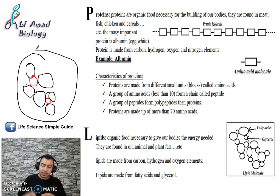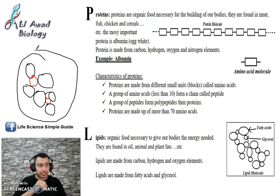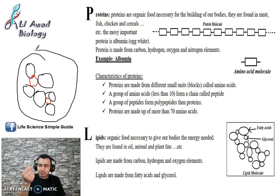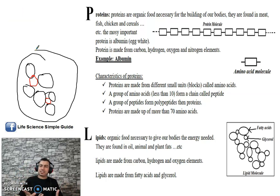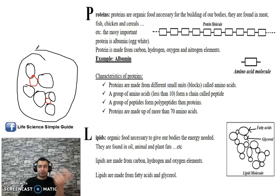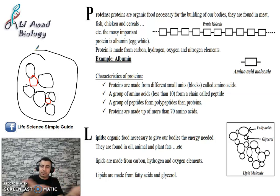Now we are going to start a new part in activity one: how to test, or tests of identification of food. For example, if I have food and I want to know if it contains organic or inorganic food, or specifically whether it contains sugar, starch (carbohydrate), protein, or lipid — I need identification tests. When you eat, your food is complex. For example, bread contains starch, sugar, salt, fat, protein, and more — so it's called complex food.